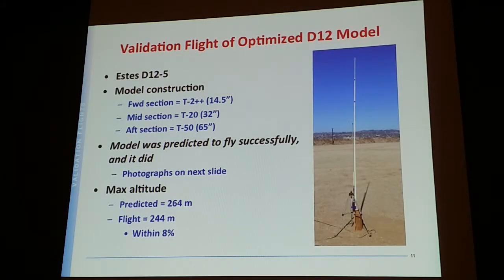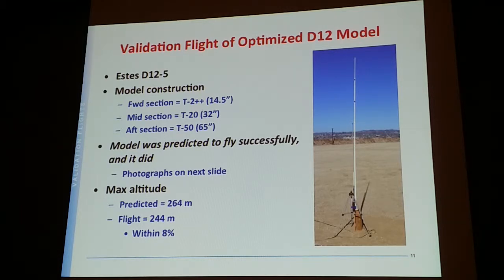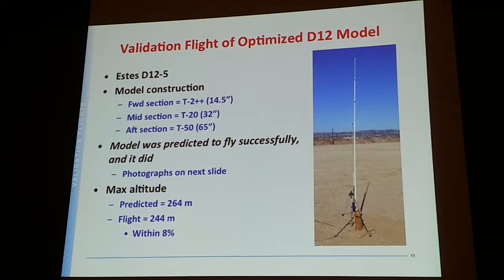I did two different designs to validate the program and see how well analysis and reality matched up. The first is a configuration for a D12, with length as suggested by the program. I built and flew the model. It did fly successfully — it did not buckle. The altimeter measured 244 meters; the prediction was 264 meters. So I'm within 8 percent — not too bad for program validation.